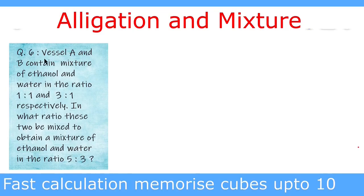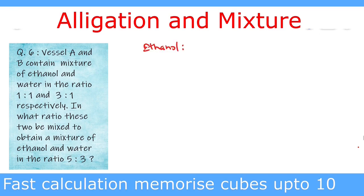The question is: Vessel A and B contain a mixture of ethanol and water in the ratio 1:1 and 3:1 respectively. In what ratio should these two be mixed to obtain a mixture of ethanol and water in the ratio 5:3? Now we separate these and find the portion of ethanol and the portion of water in the total mixture.